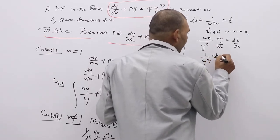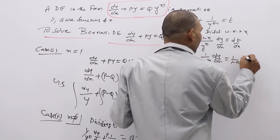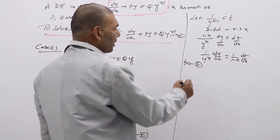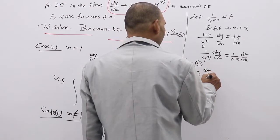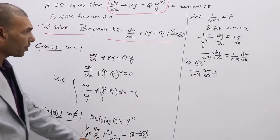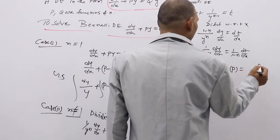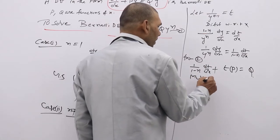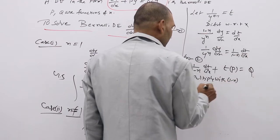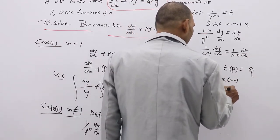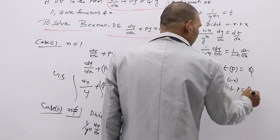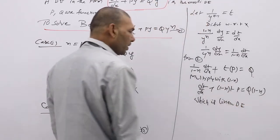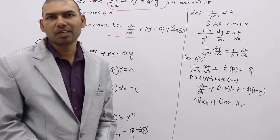From this, (1/y^N)(dy/dx) equals 1/(1 minus N) · dT/dx. Substituting into the second equation: 1/(1-N) · dT/dx plus T·P equal to Q. Multiplying through by (1 minus N) gives dT/dx plus (1 minus N)·T·P equal to Q·(1 minus N), which is a linear differential equation that can be solved using standard linear DE techniques.